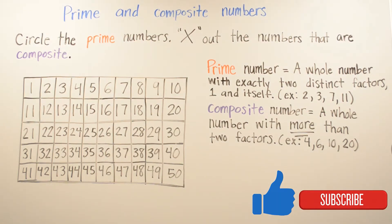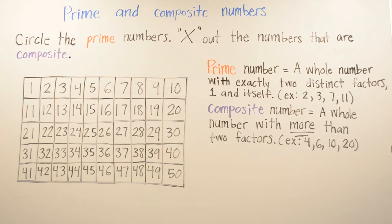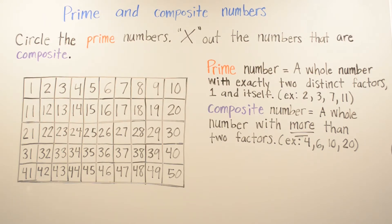In this video, we're going to be talking about prime and composite numbers. We're going to circle the prime numbers with a red marker, and we're going to X out the numbers that are composite with a purple marker. On the right-hand side, you see the definition for a prime number: a whole number with exactly two distinct factors, one and itself. A composite number is a whole number with more than two factors. I'm going to give you two examples — one of a prime number and one of a composite number.